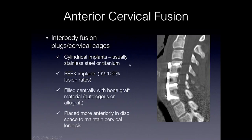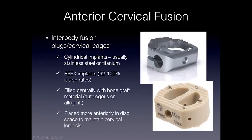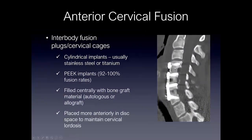Once the disc is removed, an interbody fusion plug or cervical cage is placed. These tend to be cylindrical implants with holes in the middle. These can be titanium or PEEK implants. PEEK implants tend to have a high rate of fusion — about 92% to 100% has been reported. These can be filled with bone graft material, either autologous or allograft material, and these tend to be placed anteriorly within the disc to try to create that normal cervical lordosis when cervical fusion is performed.